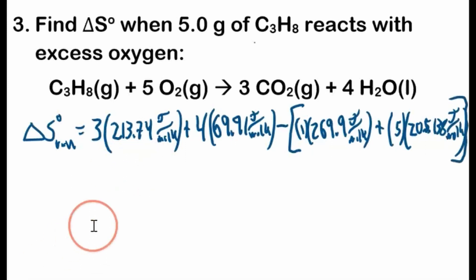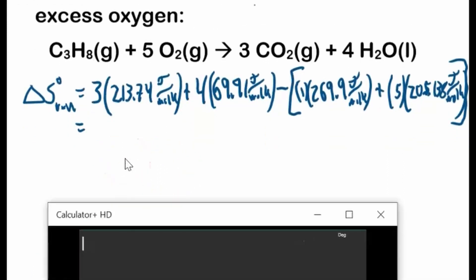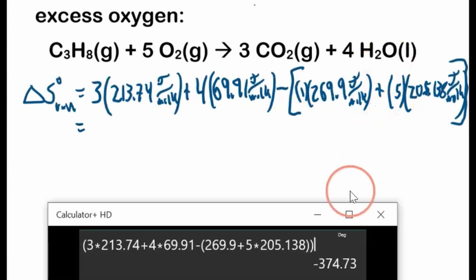Close the big brackets. Okay, so I'm going to punch this in, in one fell swoop, so 3 times 213.74, plus 4 times 69.91, minus big bracket, 1, I won't include the 1, 269.9, plus 5 times 205.138, brackets closed, everything's good, looks good.